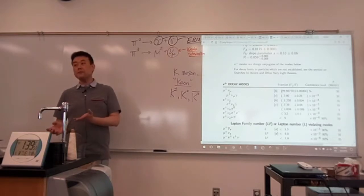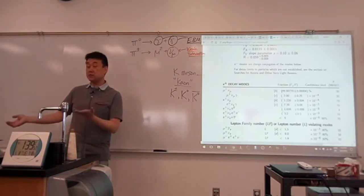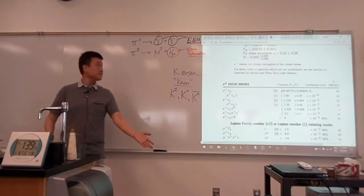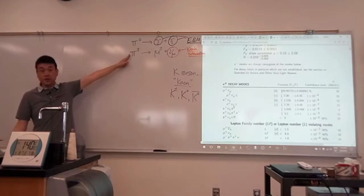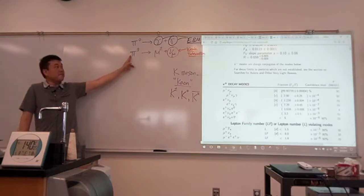So whenever particle physicists see something not happening, like here, they never see a charged pion decaying by electromagnetic interaction, what they would say is it must be forbidden somehow. Somehow it must not be possible for this decay to happen by electromagnetic force at all.